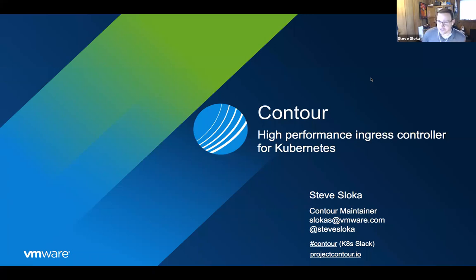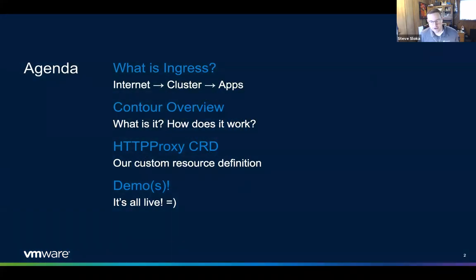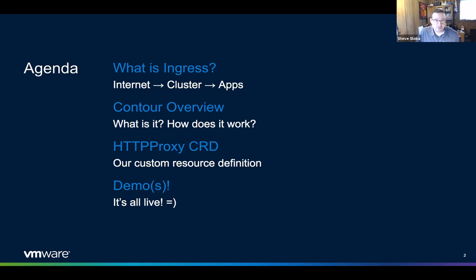Today we're going to talk about Contour, which is an Ingress controller for Kubernetes. Quick look at the agenda: we're going to review what Ingress is to level set your background. We'll look at Contour — what is it, how does it work, what are the components. Then we'll dig into a CRD we wrote called HTTP Proxy, why we built it, and reasons you might want to use it versus Ingress today. And then we'll do a bunch of demos — majority of today's talk will be live coding on a server.